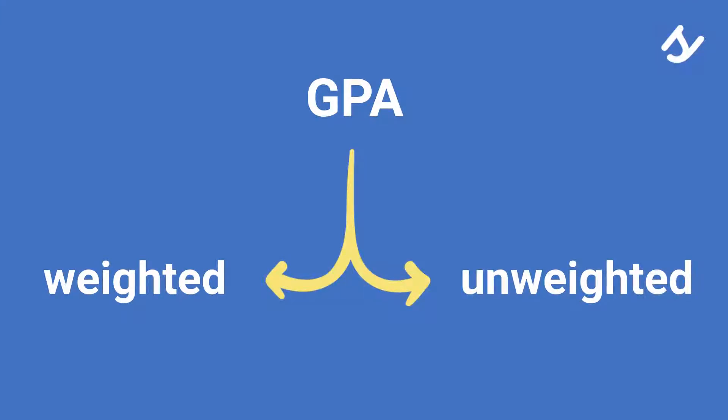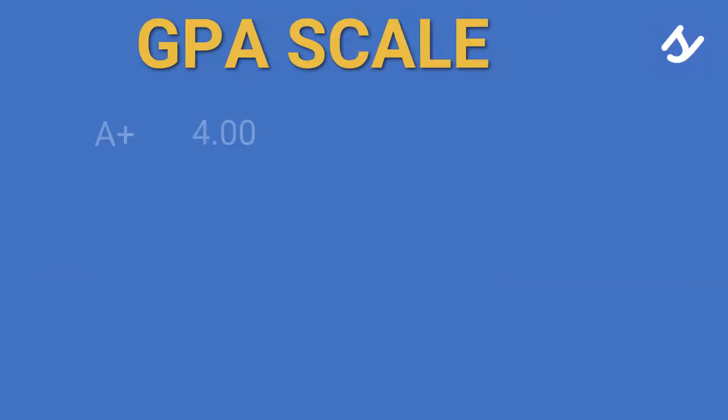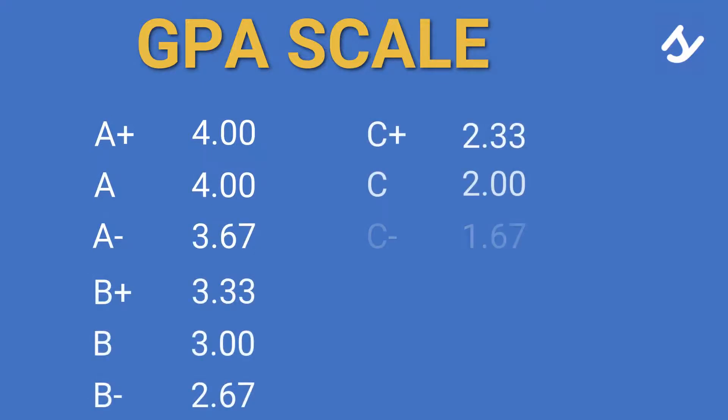This means the difficulty of your courses will not be considered. Whether you get an A in an easy or challenging class, it will always be a 4.0. Here's a common scale which runs from 0 to 4.0.